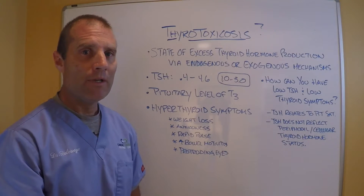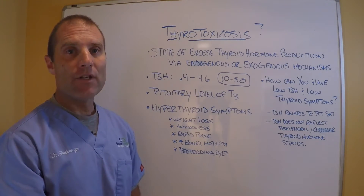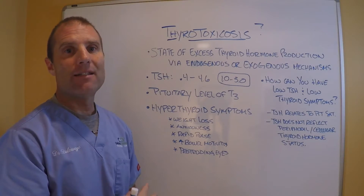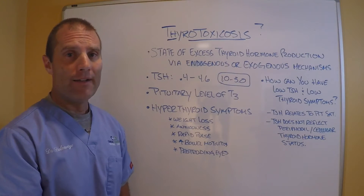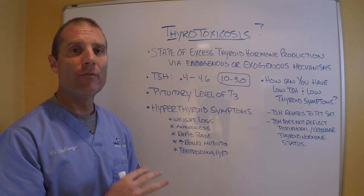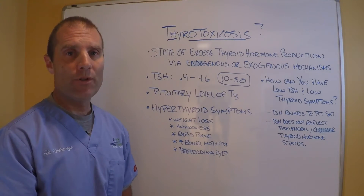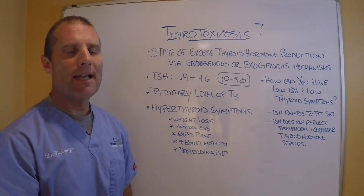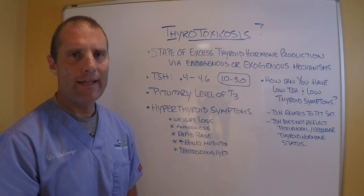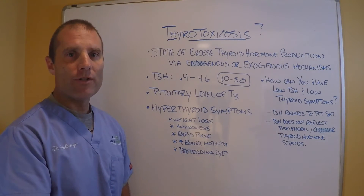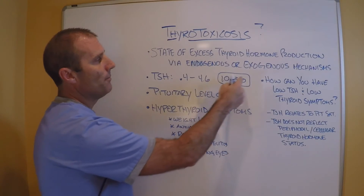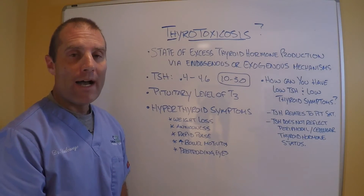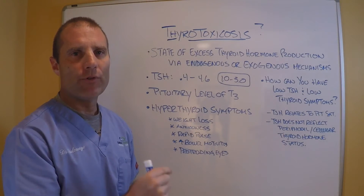In a true hyperthyroid state — Graves' disease — there is an excessive amount of T4 and T3 that overwhelms the cellular resistance response, gets into the cells, and upregulates metabolism. That's a dangerous situation. But for the vast majority of people who have hypothyroid symptoms and have been diagnosed with hypothyroidism, when their TSH is below 0.4, it's not because the gland is excessively producing thyroid hormone — it's typically because they're over-medicated. Their TSH is dropping too low because they've overwhelmed the pituitary gland with exogenous thyroid hormone, but they're still hypothyroid because it's not getting into the peripheral tissues.